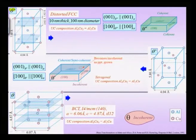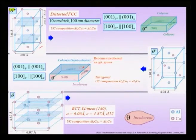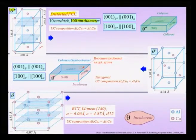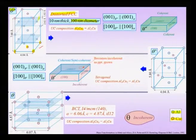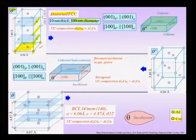The theta double prime precipitate has a unit cell which is a distorted FCC. It is typically about 10 nanometers thick and about 100 nanometers in diameter. The unit cell composition is approximately Al₆Cu₂, meaning for every copper atom there are 3 aluminium atoms. There are planes containing only copper atoms and planes containing only aluminium atoms — this is a distorted FCC structure with unit cell composition Al₃Cu.